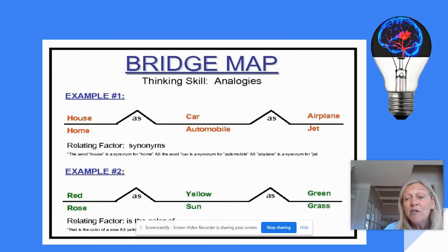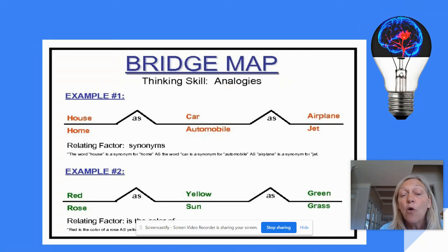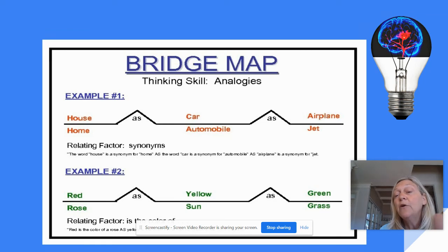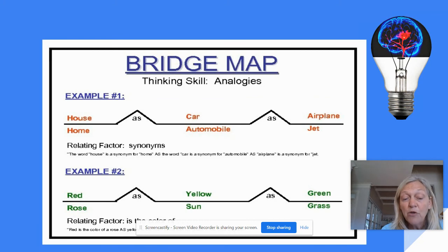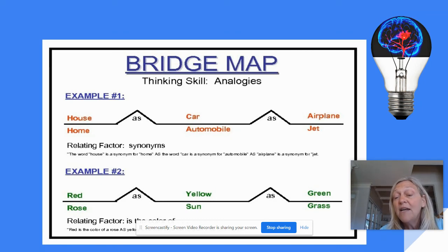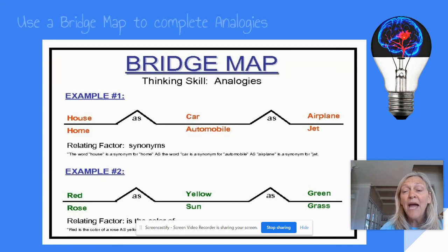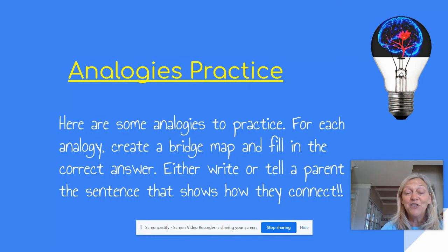Bridge maps can also be extended. For example, in the first example these are synonyms: house is to home, just as car is a synonym for automobile, just as airplane is a synonym for jet. In example two, the relating factor is 'the color of': red is the color of rose, just as yellow is the color of sun, just as green is the color of grass. So as you can see, we have lots of relationships.